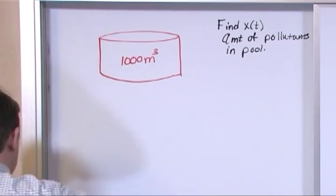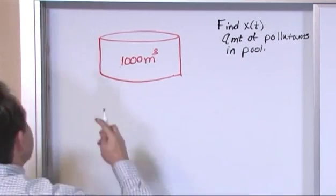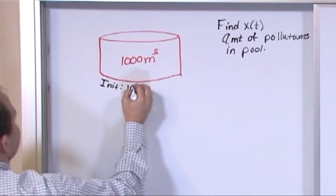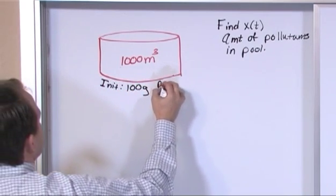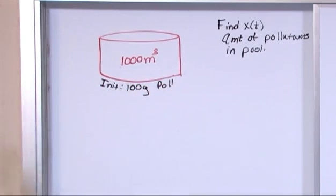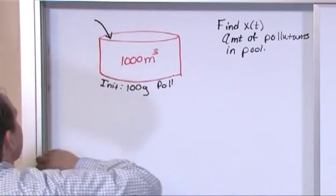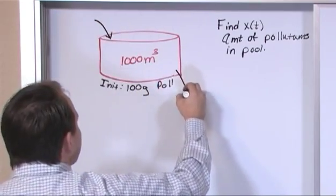And initially inside this pool, let me change colors. Initially, I'm going to put initially, I have 100 grams of pollutants. I'm going to call it 'pol' for pollutants. Inside this pool. That's what I have initially. Now I have water flowing in and I have water flowing out. So the water flowing in I'm just going to represent by this arrow and the water flowing out I'm going to represent...